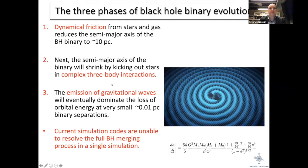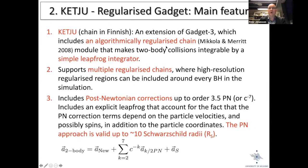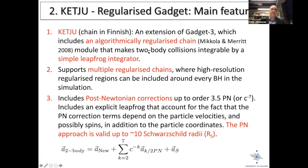We have developed a code called KETJU. The word 'ketju' means chain in Finnish, because we use something called an algorithmically regularized chain for the calculation — developed originally by Mikkola and Merritt. We adopted this into the GADGET code. This makes two-body collisions integrable using a simple leapfrog integrator. The code supports multiple chain regions — high-resolution regions around every black hole — and includes post-Newtonian corrections up to order 3.5 PN, which scales with the speed of light to the power of minus seven.